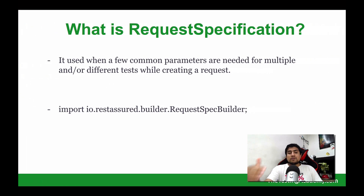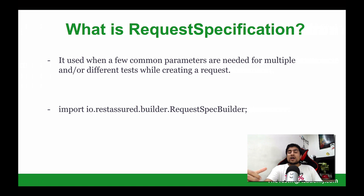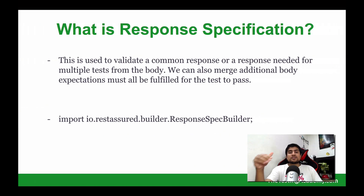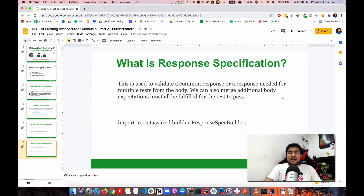The request spec builder is used when common parameters are needed for multiple different tests while creating a request. Suppose you want to send a request and have a common URL or common endpoint. You can create a separate function where you set all the common things for the tests you are running. If you have 10 tests with common parameters, you set them once and use the same request specification in all functions. Similarly for the response spec builder — after getting a response, you can validate common things, like a status code that is always 200.